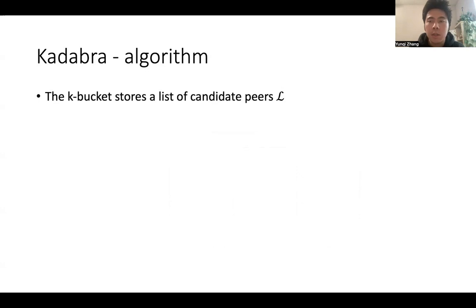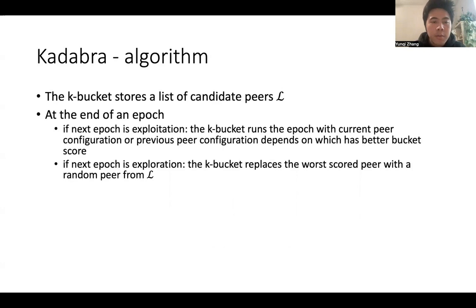Note that K-bucket is a sub-routing table. Each K-bucket stores a list of candidate peers. At the end of an epoch, here the epoch is user-defined. You can have how many queries you want in an epoch. In the paper, we use 100 queries.